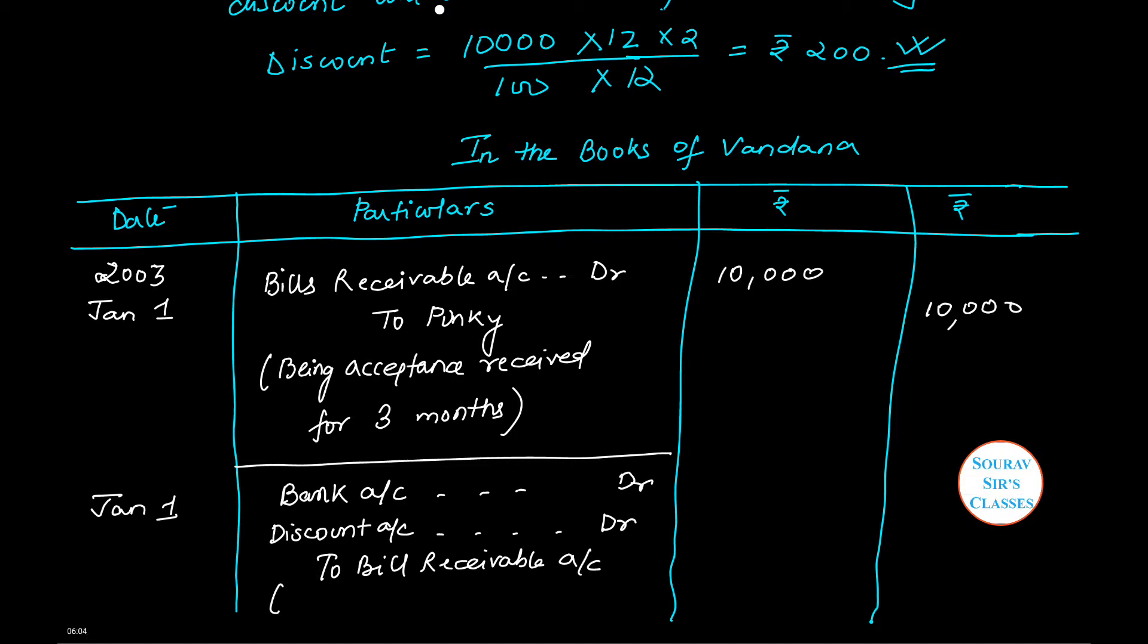This indicates being bill discounted. Let us now fill in the amounts. This will be ₹9,800, this will be ₹10,000, and the difference is ₹200, which is the discount. This journal entry ends, and there will be only two journal entries made. So we have completed journalizing.